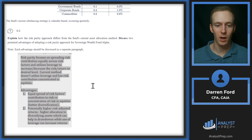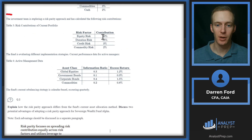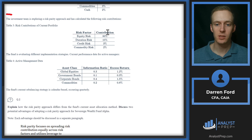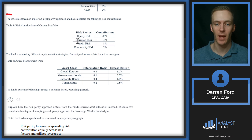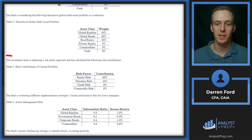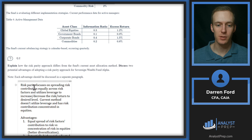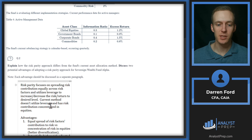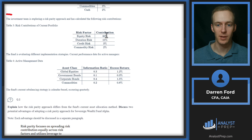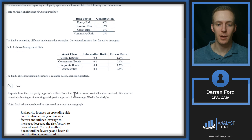Risk parity focuses on spreading risk contribution more equally across risk factors. Rather than the contribution being 80% equity risk, these would be approximately 25% each — or adjusted to whatever target we want — and that's going to determine how much we allocate to equities, bonds (duration vs. credit risk), and commodities, leading to significantly different asset class weightings. Discussing how risk parity differs: it utilizes leverage to increase or decrease the risk-return to the desired level, whereas the current method doesn't utilize leverage and has risk contribution concentrated 80% in equities.